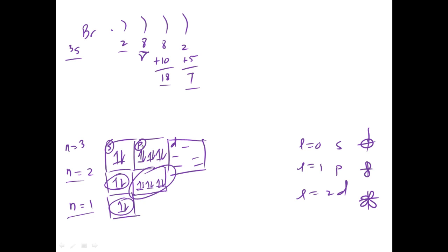That's the P sublevel. So we just added those eight electrons up here in the atomic diagram. Alright.